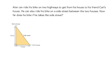So here they give us a little picture. We know that Alan's house is up here at point A, and then Carl's house is down at point C.